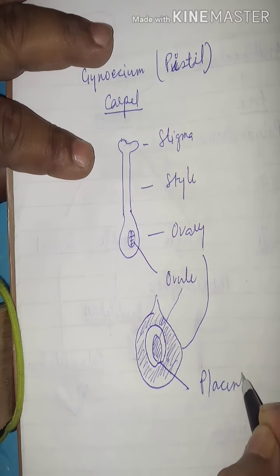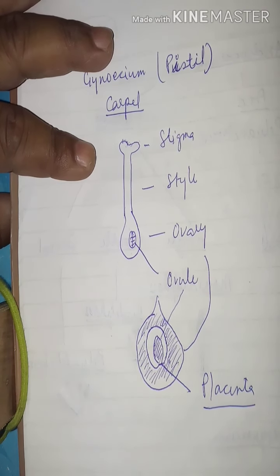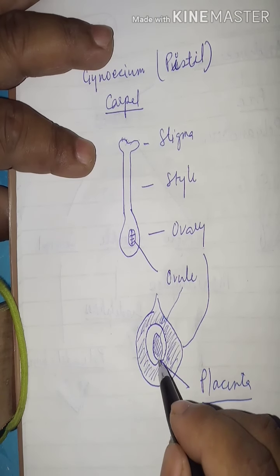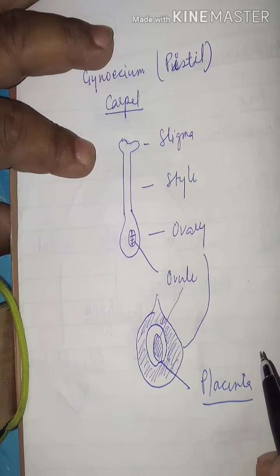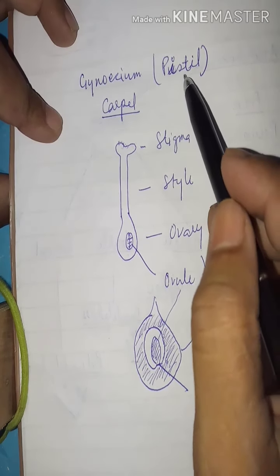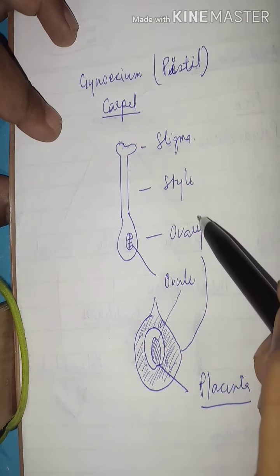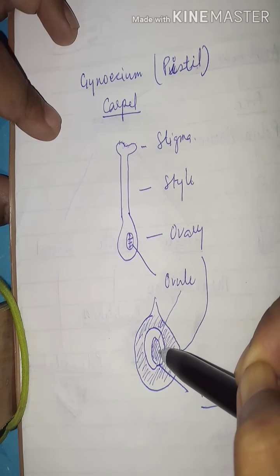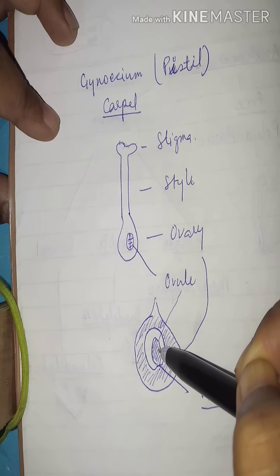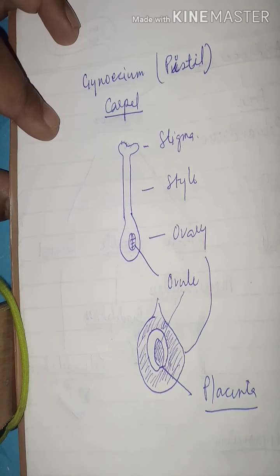The ovule is attached to the inner wall of the ovary by a stalk known as the placenta. The placenta is a ridge-like structure that connects the inner wall of the ovary with the ovule. To recap: the gynoecium, also known as the pistil, consists of carpels — each carpel has three parts: stigma, style, and ovary. The ovary contains ovules attached by the placenta.